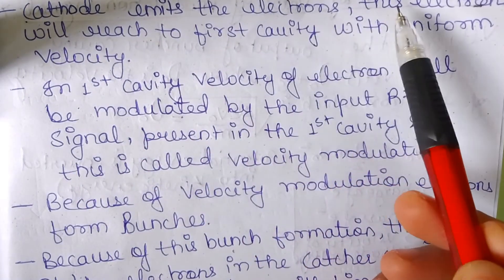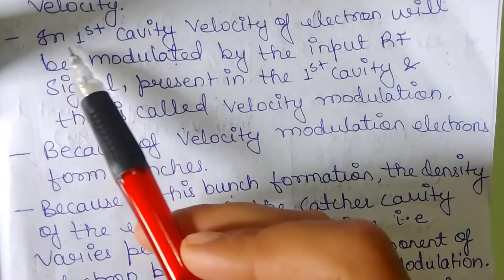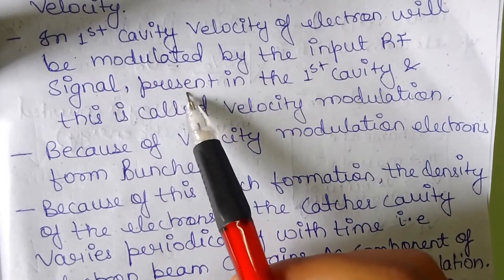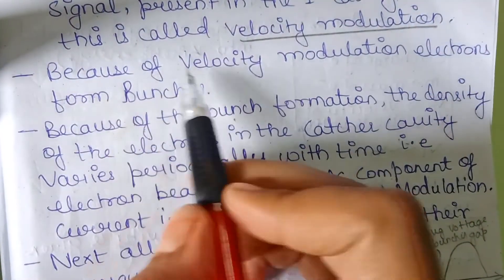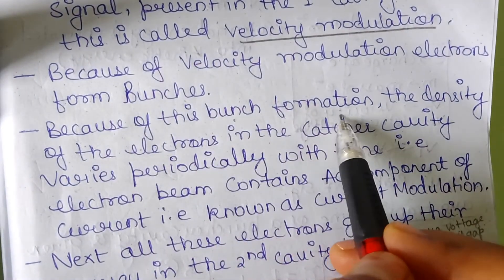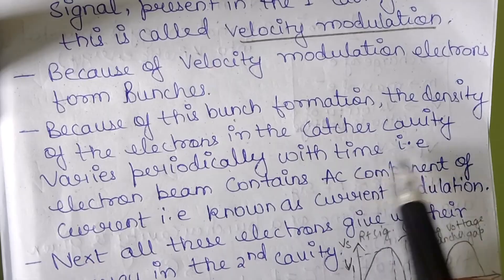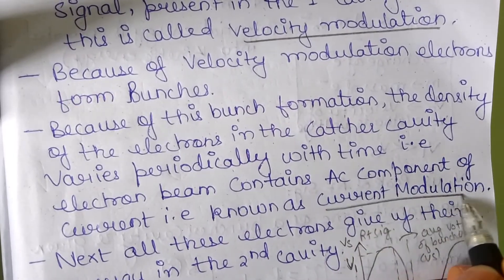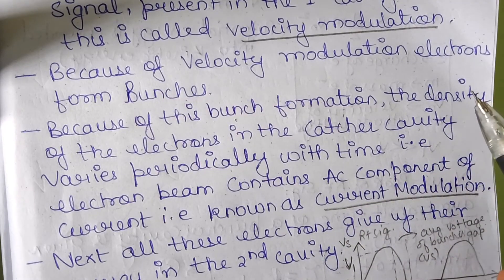The cathode emits the electrons and these electrons will reach to the first cavity with uniform velocity. In the first cavity the velocity of the electrons will be modulated by the input RF signal present in the first cavity and this is known as the velocity modulation. Because of the velocity modulation electrons form bunches. Because of this bunch formation the density of electrons in the catcher cavity varies periodically with the time. That is, the electron beam contains the AC component of the current which is known as the current modulation. Velocity modulation and current modulation are very important terms which are needed to be mentioned in this.